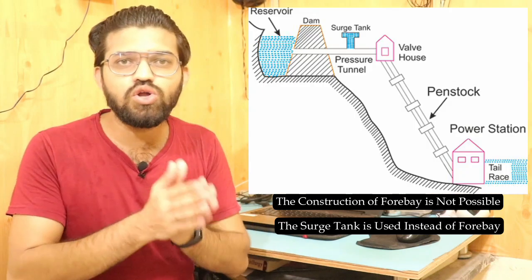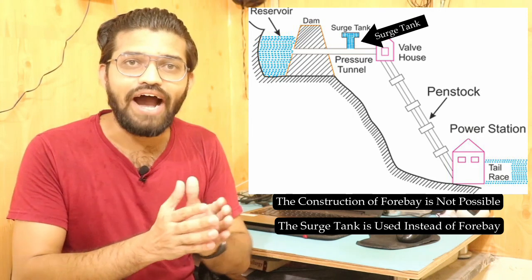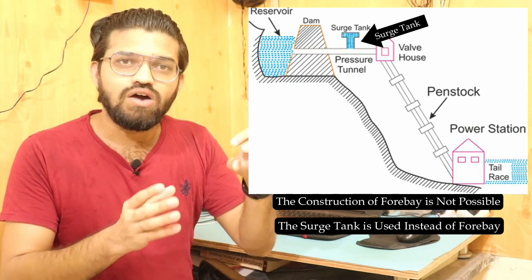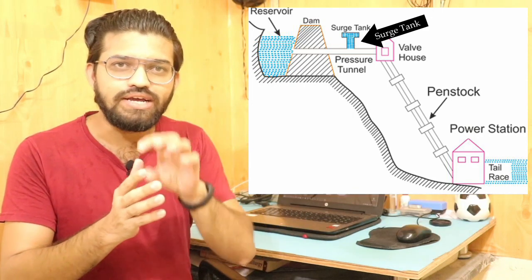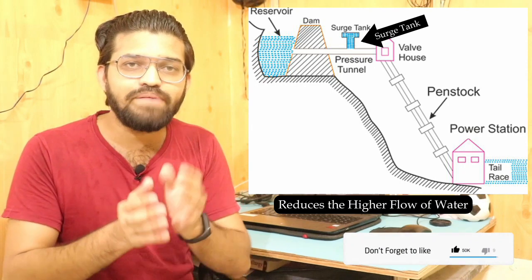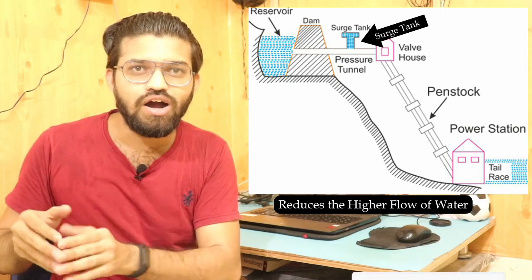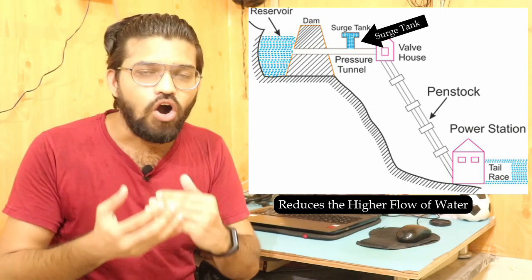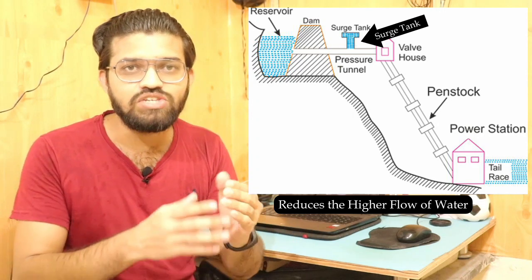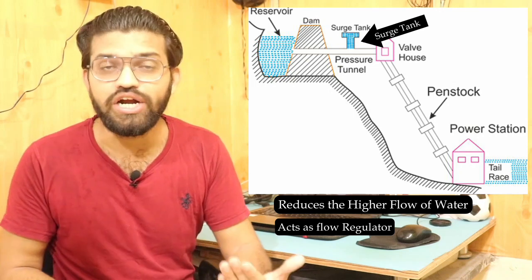The function of the surge tank is very similar to that of the forebay. Whenever a higher flow of water comes from higher elevation, the water first gets stored inside the surge tank, which reduces its flow. Then that water is allowed to go across the penstock and ultimately hit the turbine. We can say that the surge tank also acts as a flow regulator.